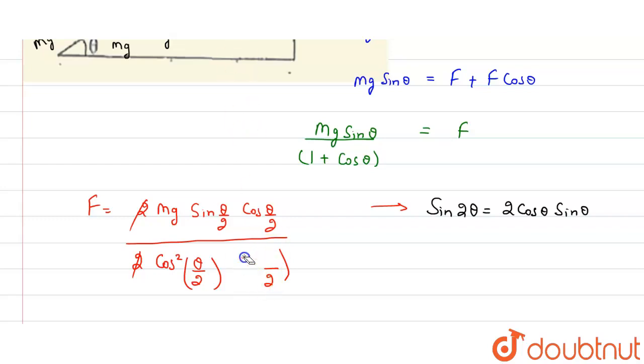So now we can see that this will be cancelled, this 2 and 2 will be cancelled. Oh sorry, we have done a mistake here, it will be cos squared theta only. So this 2 and 2 will be cancelled. This cos theta will cancel the square, and the answer will be mg sin(theta) by cos(theta), which will be tan(theta/2).